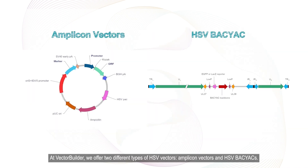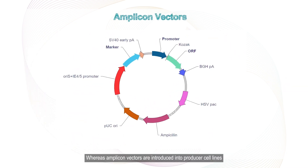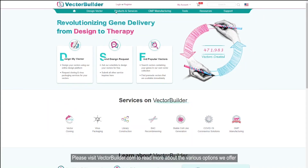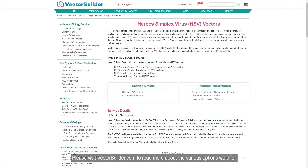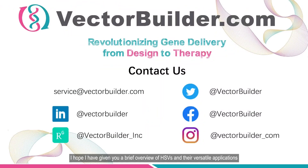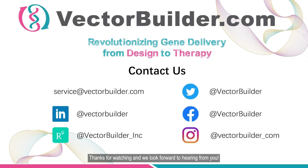At VectorBuilder, we offer two different types of HSV vectors: amplicon vectors and HSV BACs. Whereas amplicon vectors are introduced into producer cell lines, along with additional vectors to enable the virus to be packaged into HSV particles, our proprietary BACs can be customized based on your needs — they can be used for generating full-length HSVs, replication-defective HSVs, and attenuated HSVs. Please visit vectorbuilder.com to read more about the various options we offer and send our design team a request for particular designs, or get their advice on the best vector system. I hope I have given you a brief overview of HSVs and their versatile applications, as well as why they are considered an exciting choice for cell and gene therapies. Thanks for watching and we look forward to hearing from you!